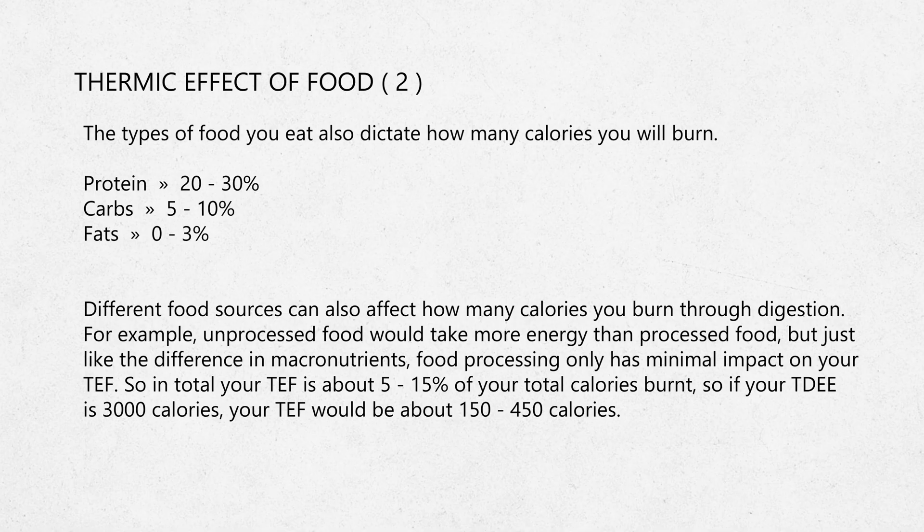The types of foods you eat also dictate how many calories you burn. Protein has the highest thermic effect of 20–30%, meaning it burns the most calories when processed. Carbs have a lower thermic effect of about 5–10%, and fat has the lowest thermic effect of about 0–3%. Unprocessed foods will generally take more energy to digest than processed foods, but the difference is generally quite minimal. In total, your TEF is about 5–15% of your total calories burned — so if your metabolic rate is 3,000 calories, your TEF would be about 150–450 calories.